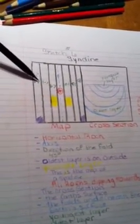This is the axis, and this is the symbol. The direction of the folds is 45 degrees, these folds here going inward. The oldest layer is the purple, on the outside.